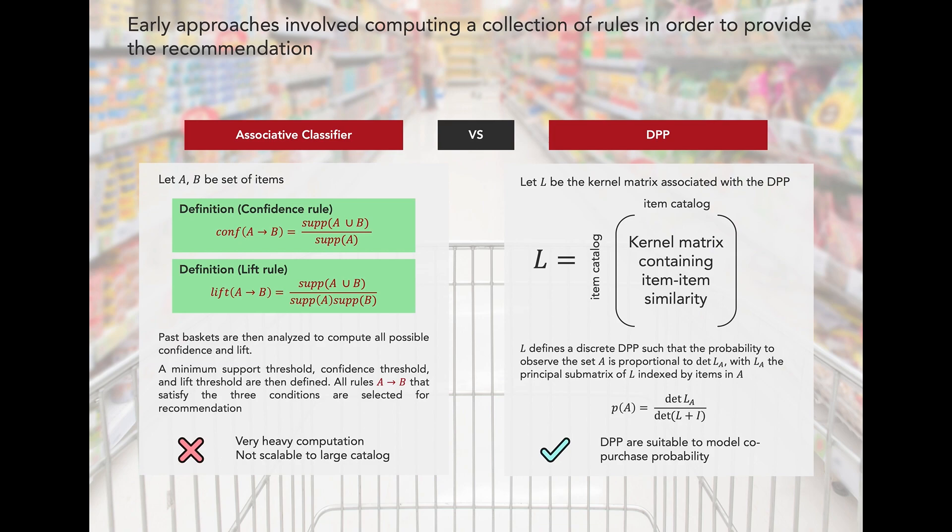In contrast, our approach is based on a determinant point process, or DPP, which is a discrete probabilistic model for subsets of items, such as shopping baskets, drawn from a ground set, such as an item catalog.